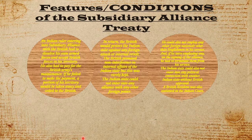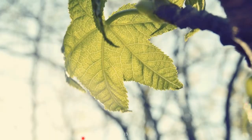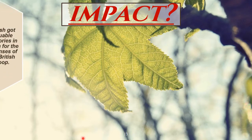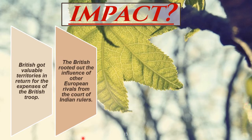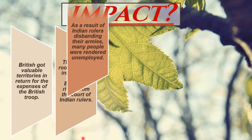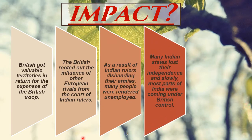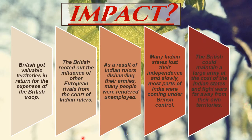The subsidiary alliance proved very advantageous for the British. The British maintained large armies at the expense of the Indian rulers. The British acquired valuable territories through subsidiary payments. This led to the expansion of the British Empire in India and an increase in its resources. The influence of European rivals, especially the French, was excluded from the courts of the Indian rulers, and the British controlled the foreign policy of the subsidiary state.